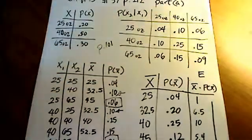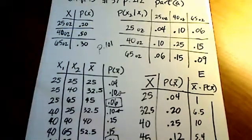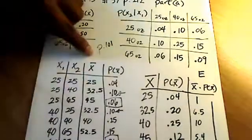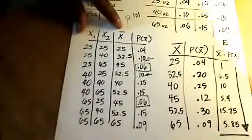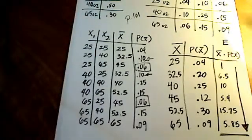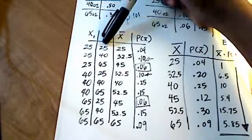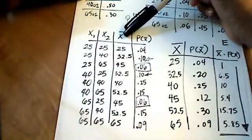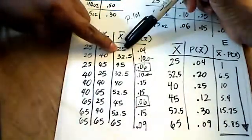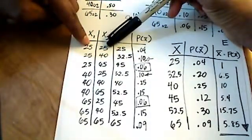This question for part A is saying determine the sampling distribution of x̄. So x̄ is simply just a mean—that's this column right here. What I did for this table is I created a table that said if the first person chooses 25 and the second person chooses 25, the average of those two purchase sizes is still 25. Average is simply add up these two values divided by two, that's how many values I have.